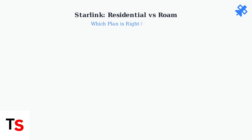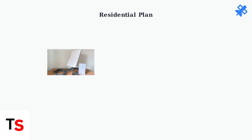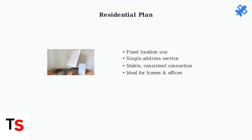Choosing the right Starlink plan depends on how and where you need Internet access. The two main options are Residential and Roam, each designed for different use cases. Starlink Residential is designed for fixed locations, providing stable Internet at a single address. It's ideal for homes and businesses that need consistent connectivity at one location.